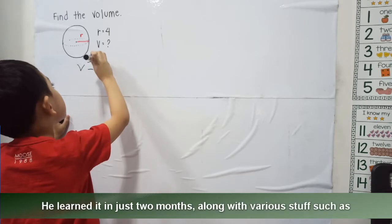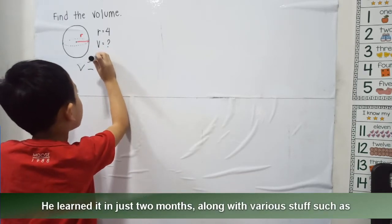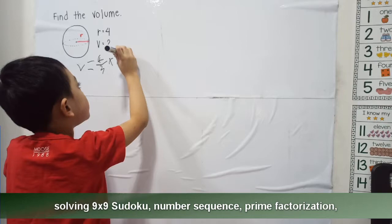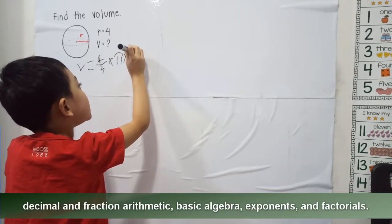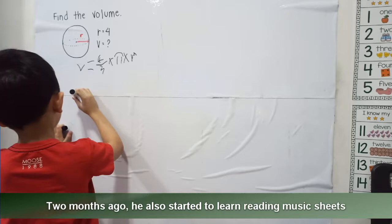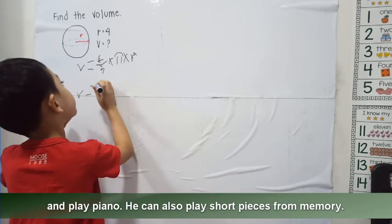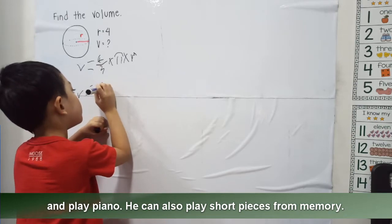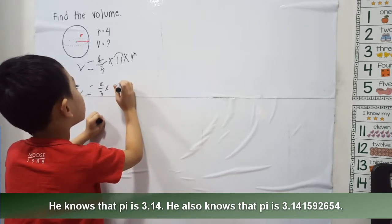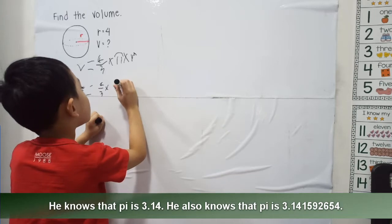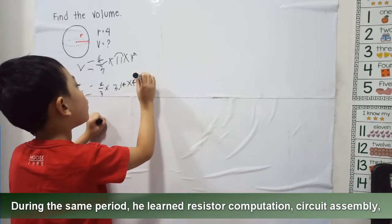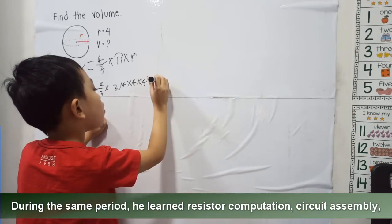V equals 4 over 3 times 3.14 times... And then V equals 4 over 3 times 3.14 times 4 times 4 times 4...